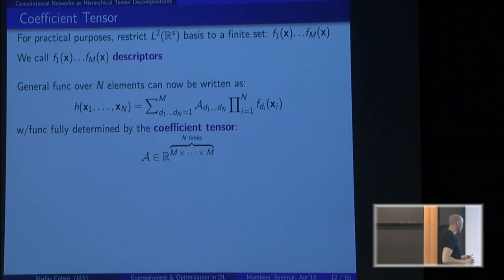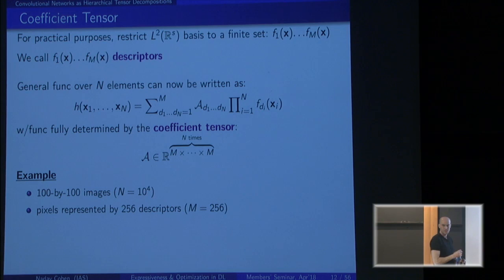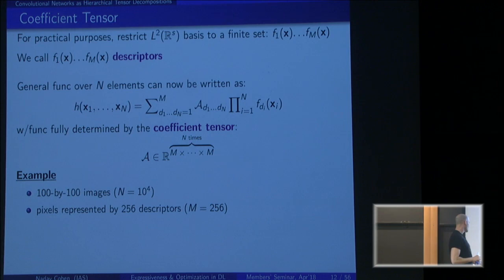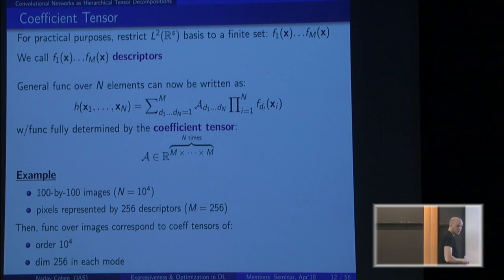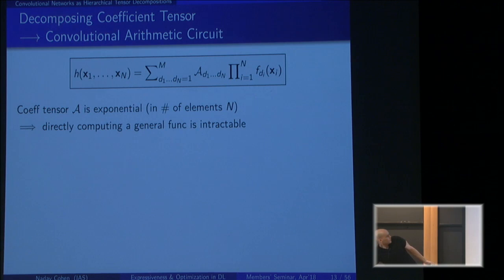As an example: for 100 by 100 images, n equals 10,000 pixels; with 256 descriptors, the coefficient tensor has 10,000 dimensions each of length 256. This tensor is exponentially large — it's not something we can work with directly. The key observation underlying all the expressiveness results is this: if I take this coefficient tensor and apply a hierarchical decomposition to it, I get a function realized by a convolutional network.